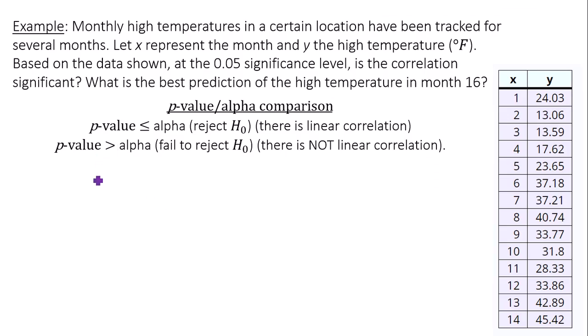So we take our p-value, which is equal to 0.0009, and we compare it to alpha. In this case, our level of significance is 0.05. That's alpha. Our p-value is clearly less than alpha.